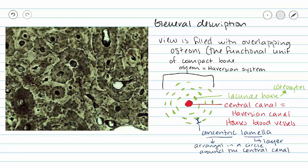And finally, we have these lines that radiate outwards from our central canal. They kind of make our central canal look like a sunburst because they go out from the central canal. All of those tiny little lines are called canaliculi.